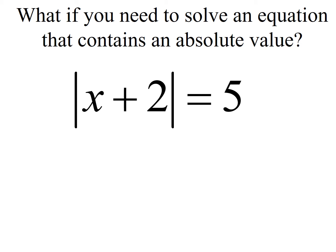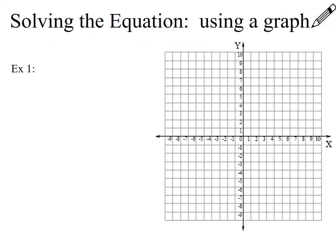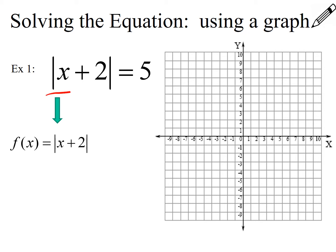We're trying to figure out what we need to do in order to solve an equation like this one. Our equation reads that the absolute value of x plus two is equal to five. The first example is solving the equation using a graph. We want to think about the graph of f(x) equal to the absolute value of x plus two. The plus two tells me that my graph is moving left two from the parent graph, so my vertex is at negative two, zero.